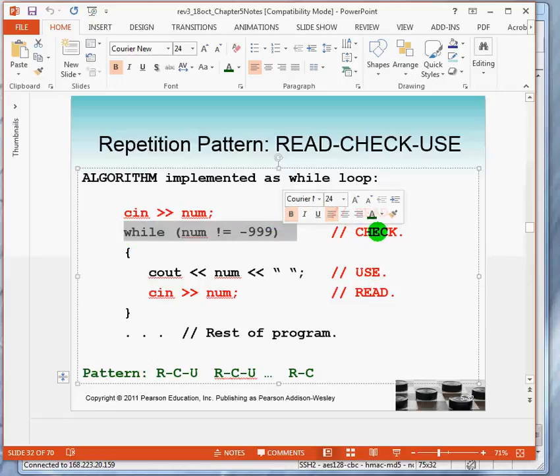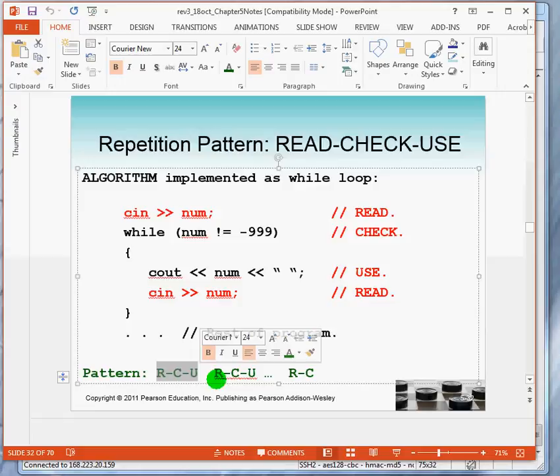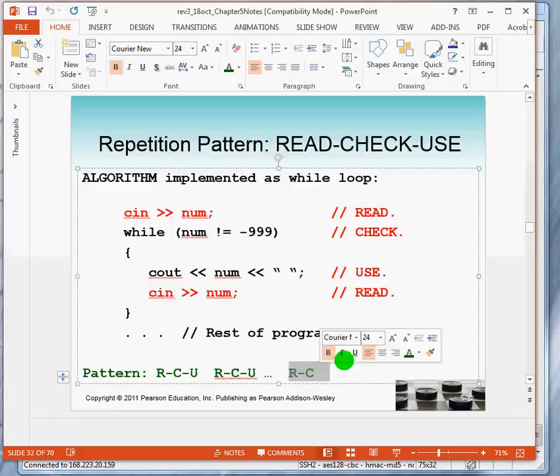Read takes us back to the while. At the while, we check. If the value is an input value, we will use it. We will read, we will check, we will use. So the pattern is read, check, use. Read, check, use. Read, check, use. And finally, the last part of this pattern will be a read and a check. The check will fail. Then there is no use. We will just resume the rest of the program.